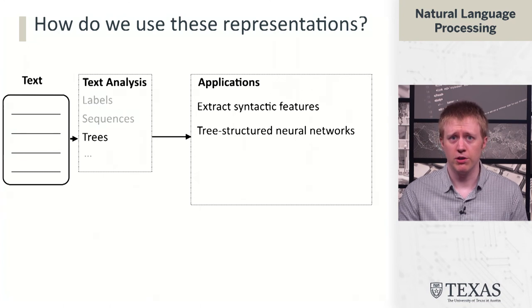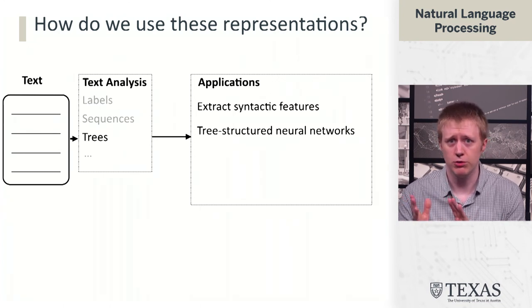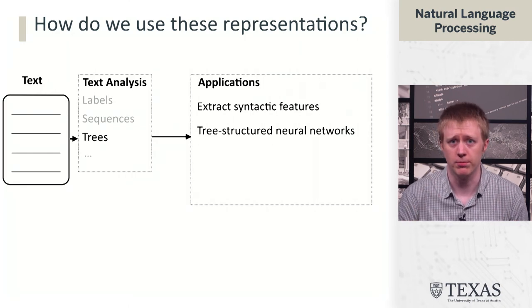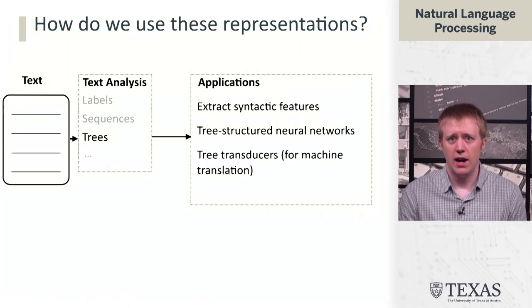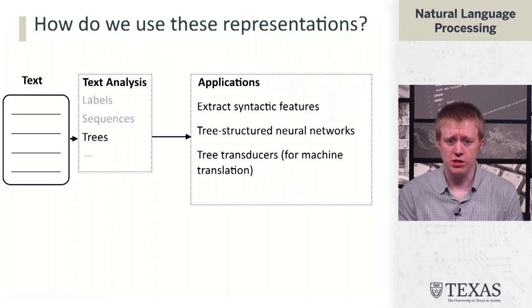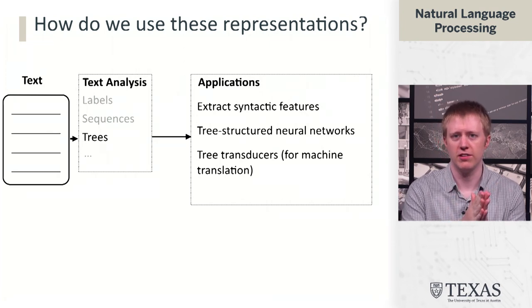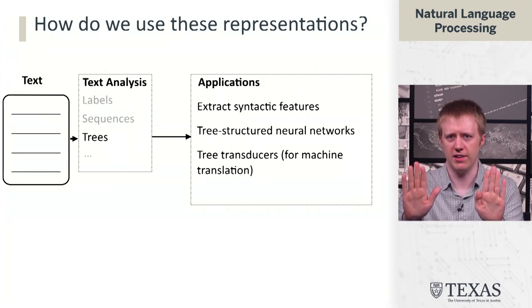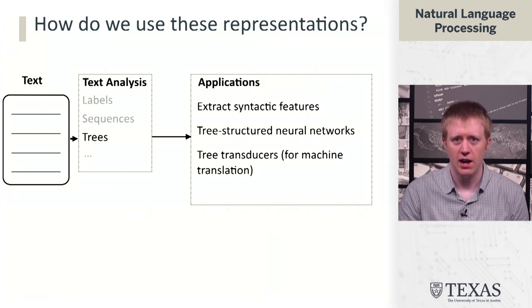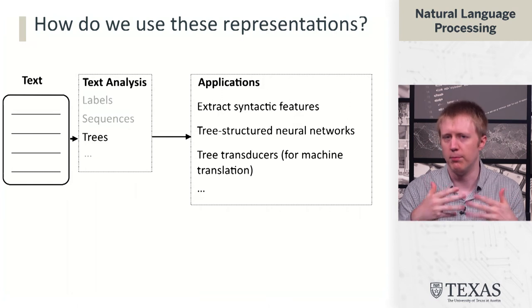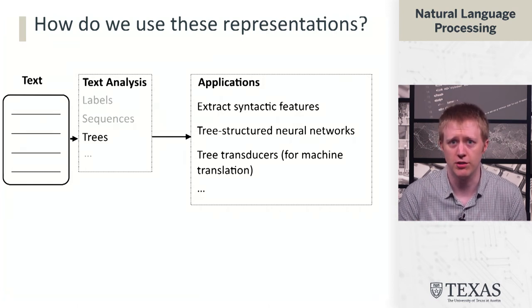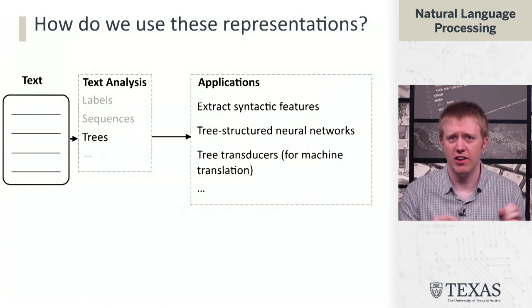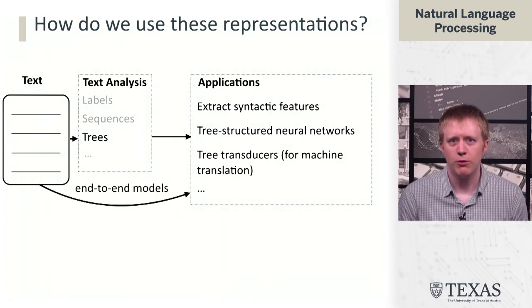Early in the course, when we think about feature-based linear models, one thing that trees might allow us to do is to extract some sort of syntactic feature for classification. Later, when we think about neural networks, a cool thing you can do with trees is to actually build your neural network to have some sort of tree structure. And when we think about machine translation, one thing we might do is actually model the translation process as a mapping from a syntactic parse in one language to a syntactic parse in another language. The model to do that is something called a tree transducer. There's a whole bunch of ways that these analyses of text can impact our modeling.